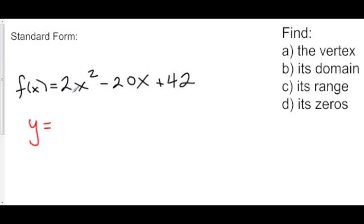And first let's turn this into intercept form. So first let's factor out that 2. So we have 2 times x squared minus 10x plus 21. Hey look, this factored polynomial in here can be factored.